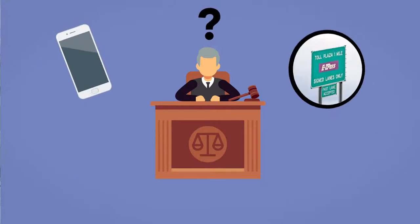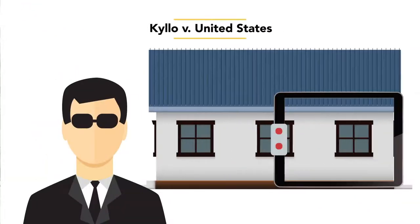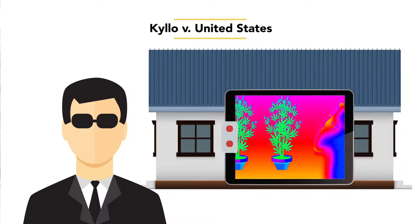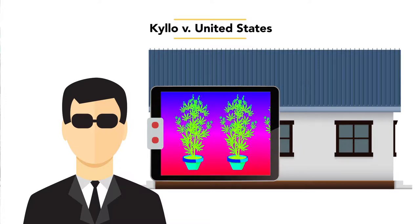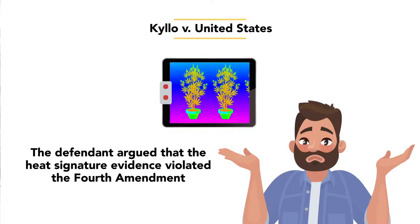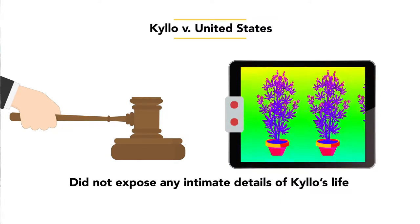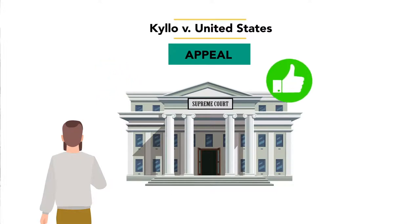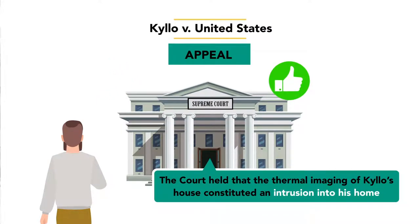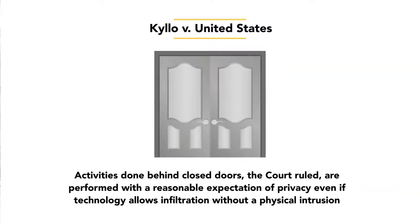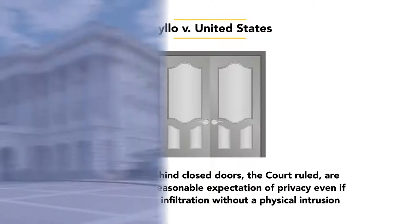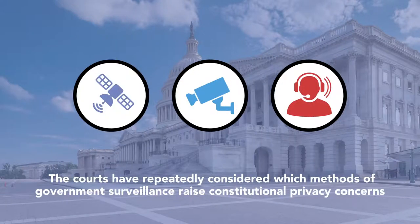Since Katz, the courts have grappled with how new methods of physical detection impact the right to privacy. In Kyllo v. United States, a federal law enforcement agent used a mobile thermal imager — a device created to detect heat signatures — to determine that the defendant was likely growing marijuana in his home. The lower courts dismissed Kyllo's argument, ruling that he had no objectively reasonable expectation of privacy, as the thermal imager did not expose any intimate details of his life. On appeal, however, the Supreme Court reversed, holding that the thermal imaging of Kyllo's house constituted an intrusion into his home. Activities done behind closed doors are performed with a reasonable expectation of privacy, even if technology allows infiltration without a physical intrusion.